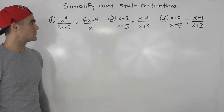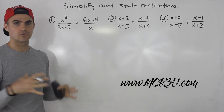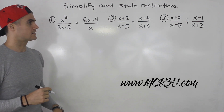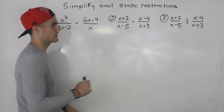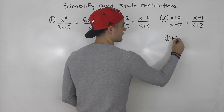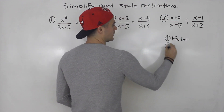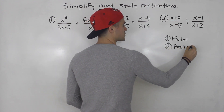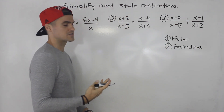Welcome back. Moving on to the next section — we're now going to be dealing with multiplying and dividing rational functions. The same steps apply as we did with simplifying. First, I factor everything. Then I get the restrictions, and the way you get the restrictions is the same: you find out when the denominator equals zero.